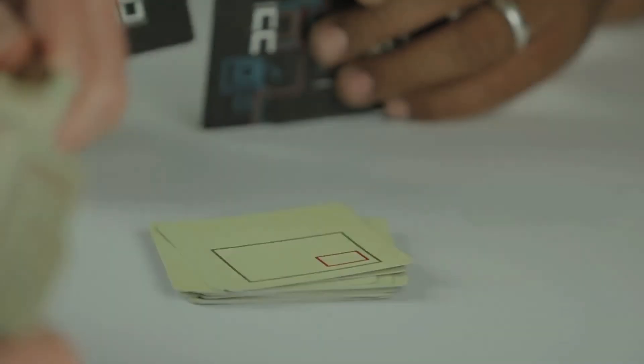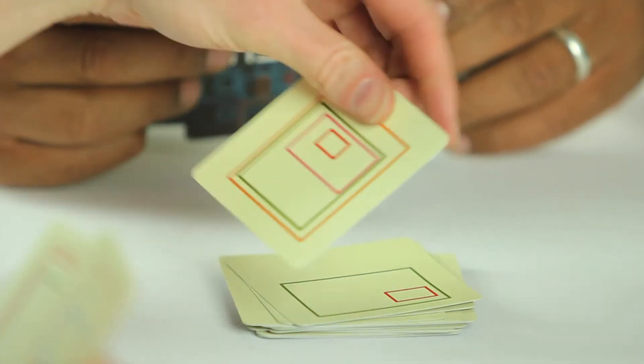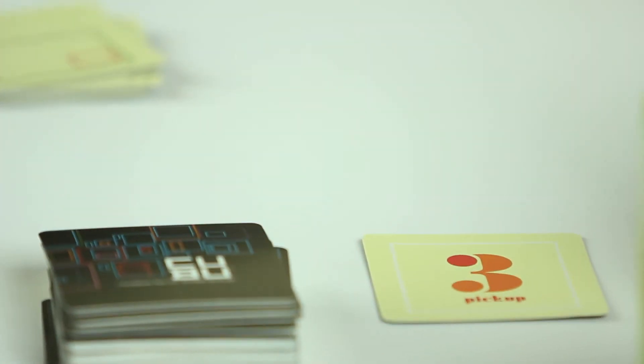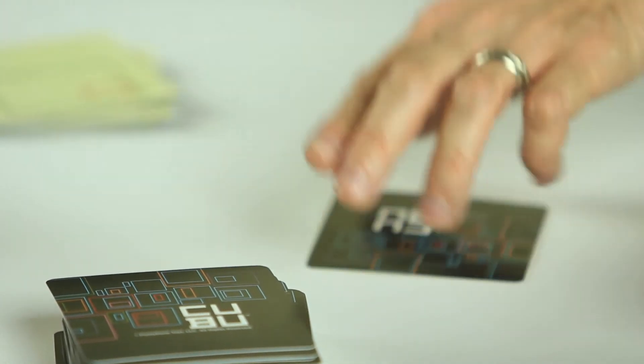When it's your turn, there are three main actions that you can do. You can play a color sequence card, you can play an action card, and if you can't do any of those, you have to pick up a card from the pickup deck.